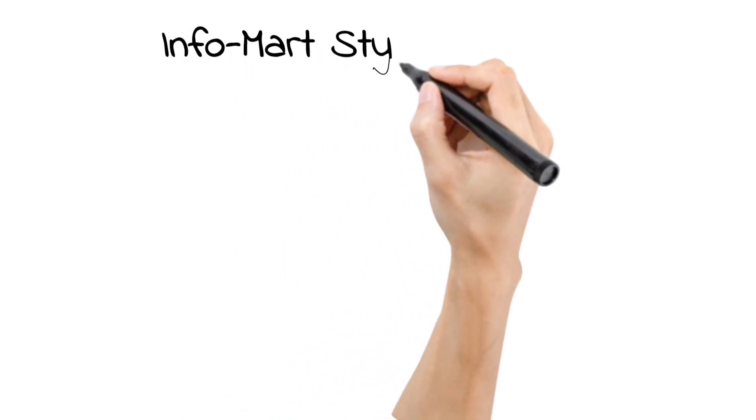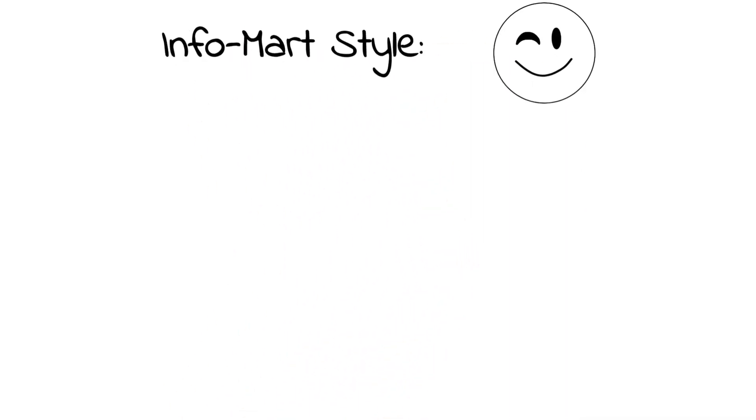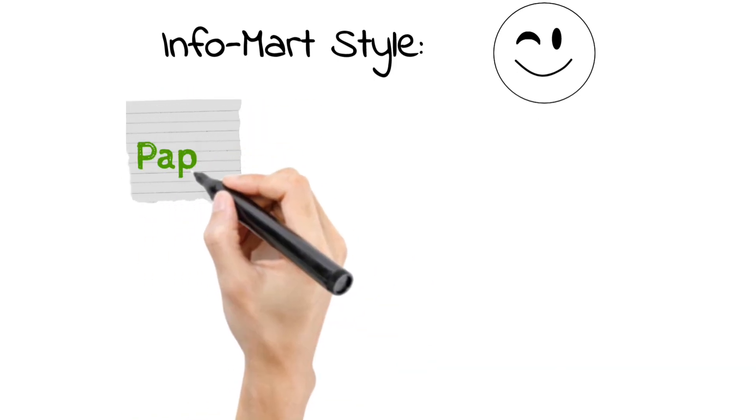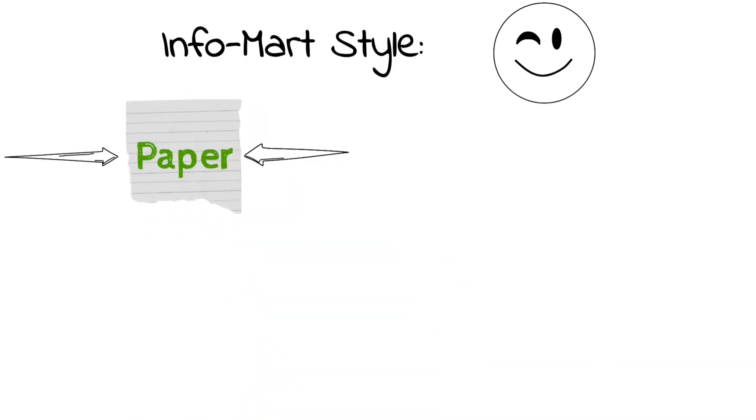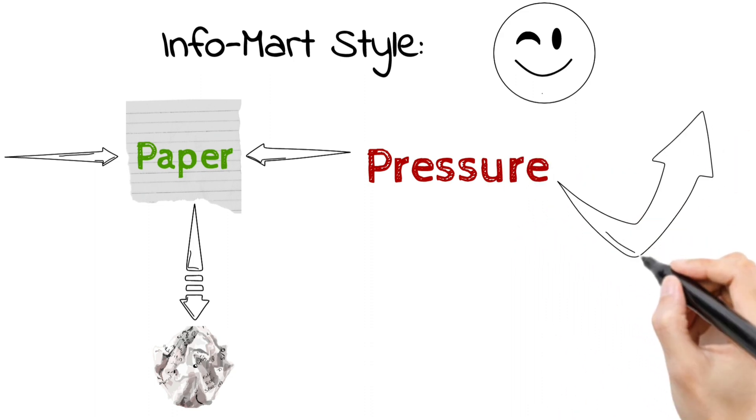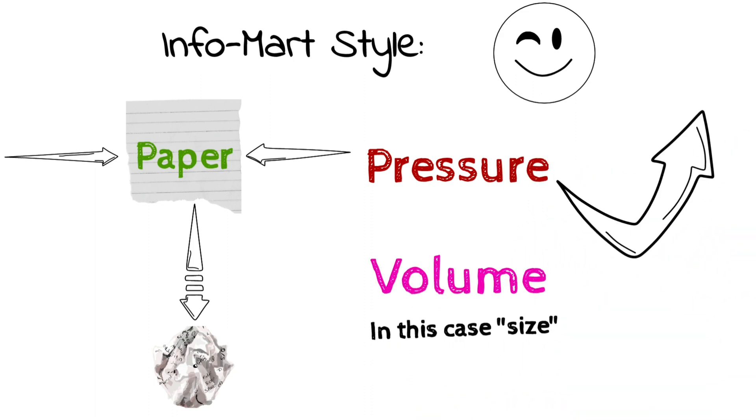Now let's oversimplify this in InfoMart style. Take a piece of paper. Now put pressure on it. What will happen is that the paper will get crumpled and reduce in size. From this we can see that when pressure increases, the volume decreases.